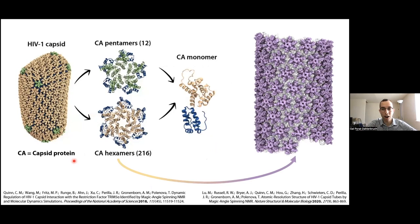HIV-1 capsids have a unique conical shape. Of particular interest are the protein-protein interactions in both the hexameric and pentameric units of the capsid, shown here zoomed in in green and yellow, and their dynamics. The plasticity of the HIV-1 conical capsid makes it difficult to study by both cryo-EM and magic angle spinning NMR. However, tubular assemblies containing only hexameric units of HIV-1 capsid protein, or HIV-1 CA, resemble the protein arrangement found in the conical capsids. Pornillos, Gronenborn, and Polenova groups solved the structure of HIV-1 CA tubular assemblies, representing the hexameric unit of the conical capsid, by combining MAS NMR, cryo-EM, and molecular dynamics.